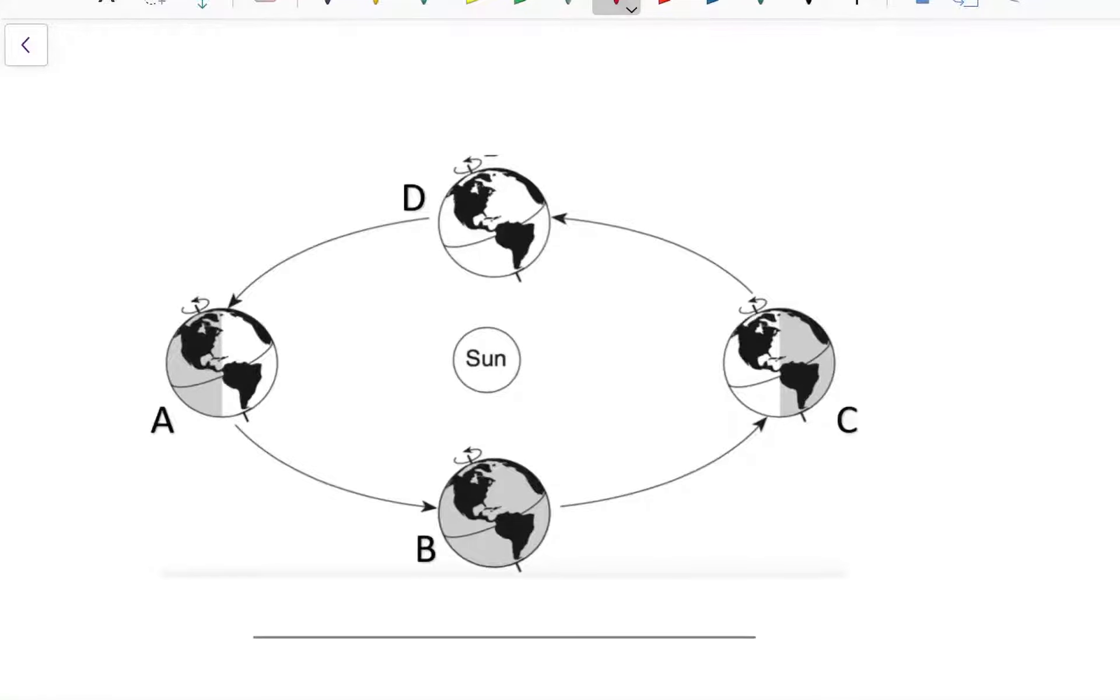Whenever you see a diagram like this and you need to figure out the season, you always want to start by identifying either winter or summer because you can analyze the tilt diagram and see where the northern hemisphere is pointing.